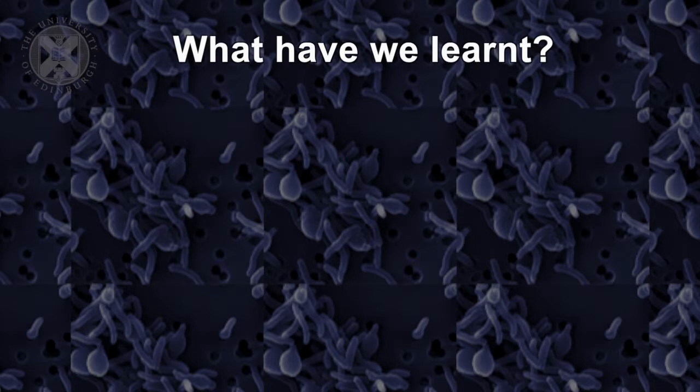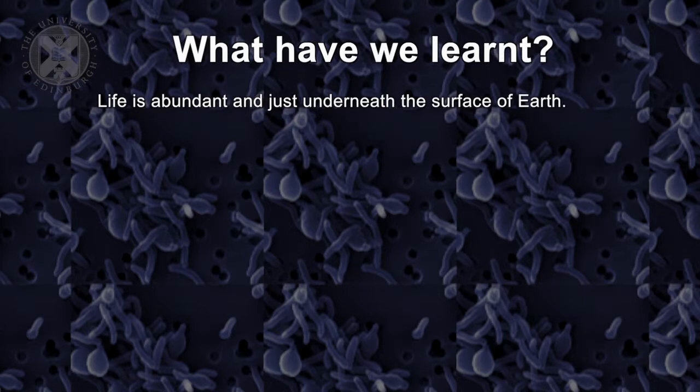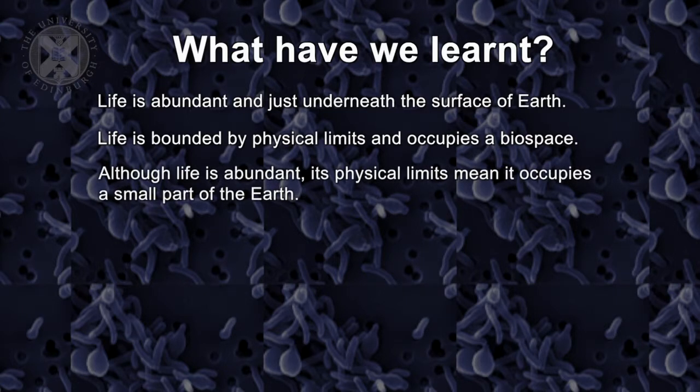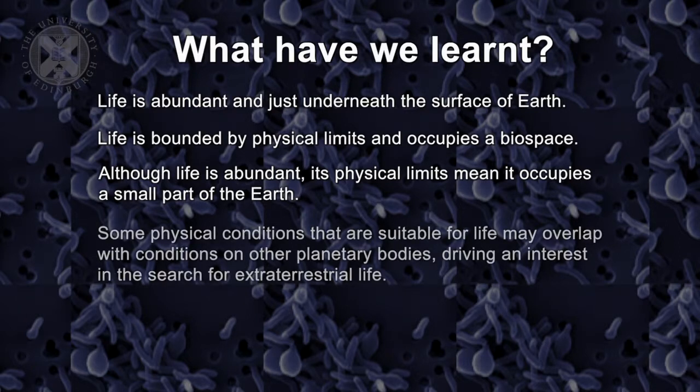So what have we learned in this talk? Well, hopefully what you've learned is that life is abundant on the surface and just underneath the surface of the Earth. But you've also learned that life is bounded by physical limits and extremes, and it occupies a biospace. And understanding the limits of that biospace is the job of astrobiologists to define the limits of the biosphere. Although life is abundant, it also means that it occupies a very small part of our planet. And we would expect that to probably be the case on other planets as well. We've also learned that some physical conditions that are suitable for life may overlap with conditions on other planetary bodies, driving an interest in the search for extraterrestrial life. And so by understanding the limits of life on Earth, we can assess better the habitability and the prospects for life elsewhere.